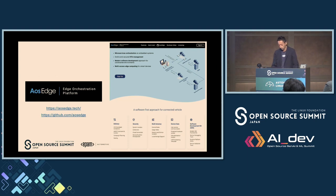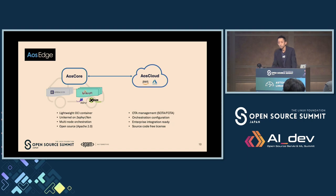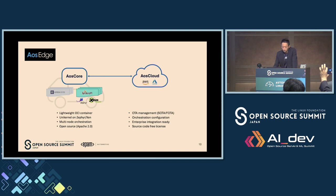AOS Core is the runtime for the vehicle or embedded system, and AOS Cloud manages it. AOS Core has a lightweight OCI-compatible container, Unikernel support with Zephyr and Xen, and multi-node orchestration — which is what makes dynamic rebalance possible. The whole code is open source under Apache 2.0, so you can have a look and contribute.